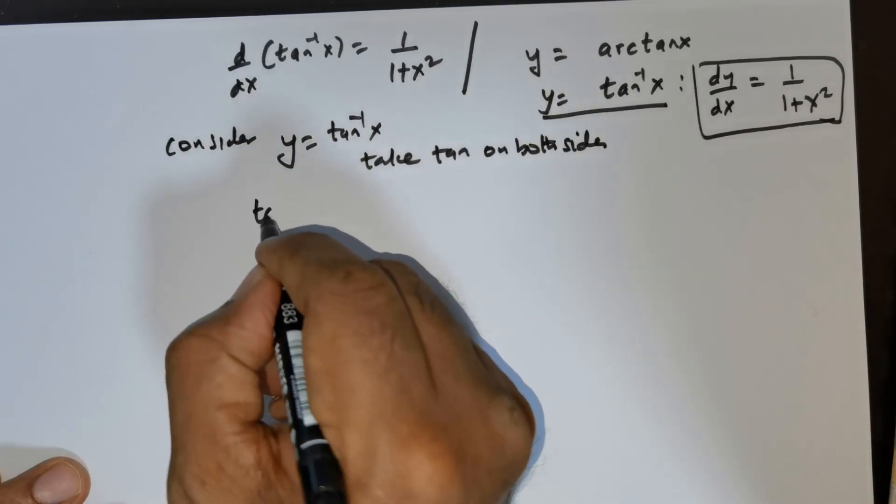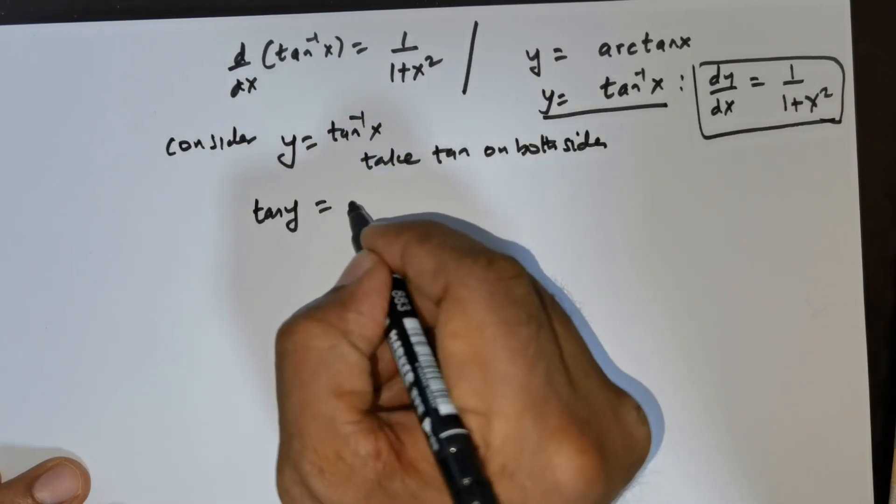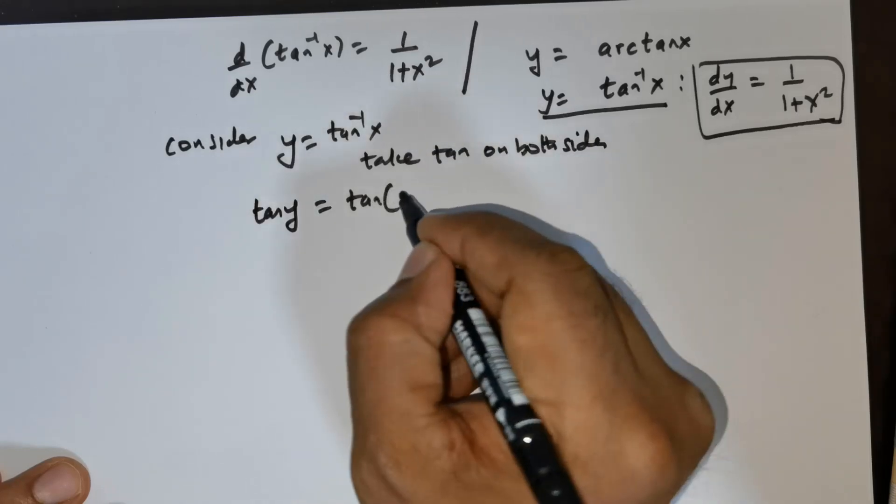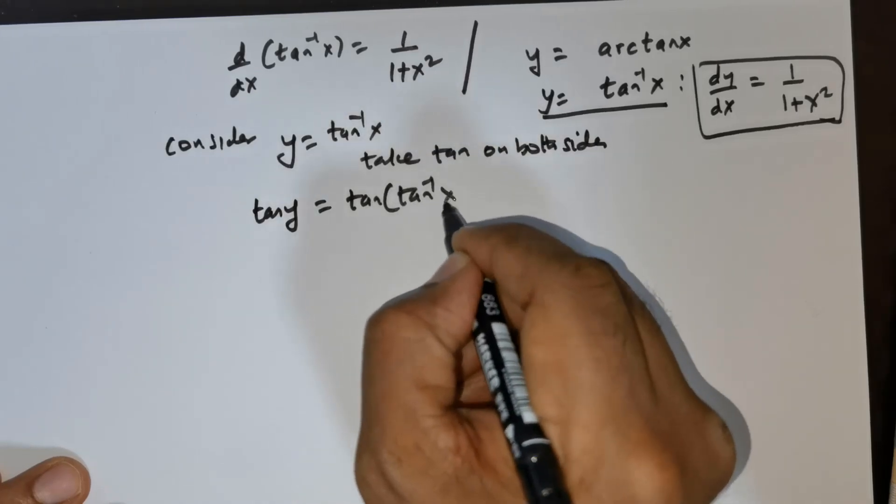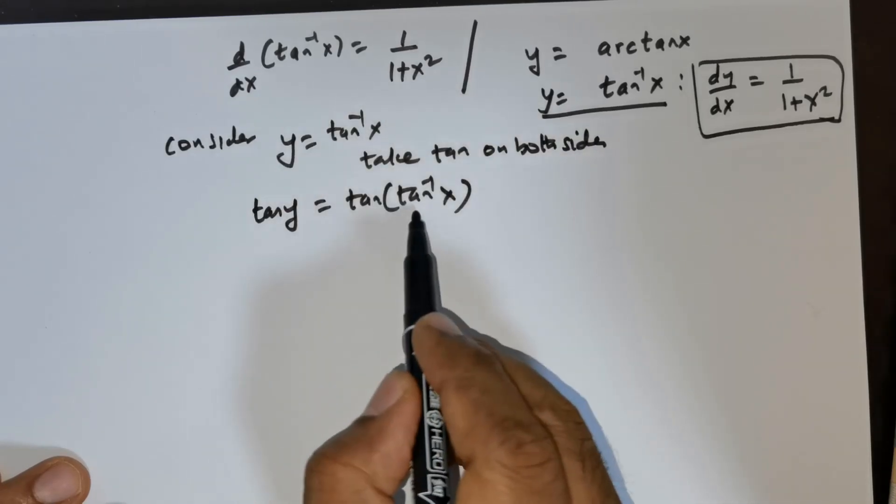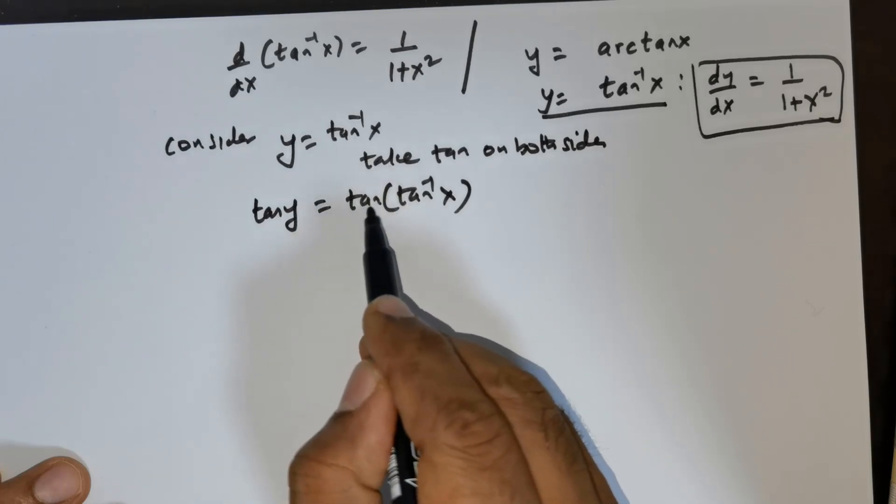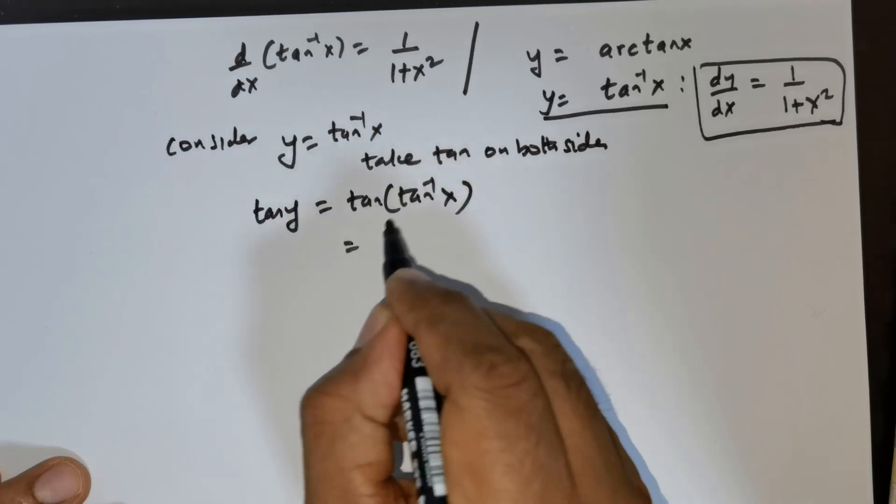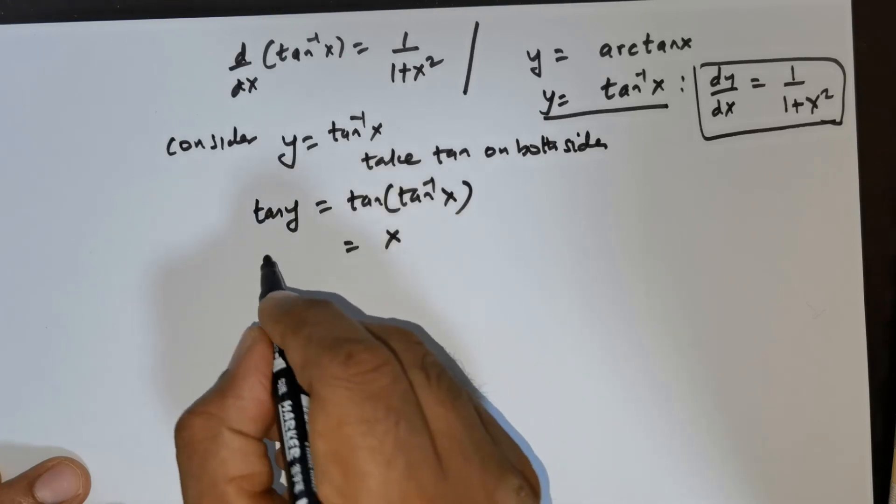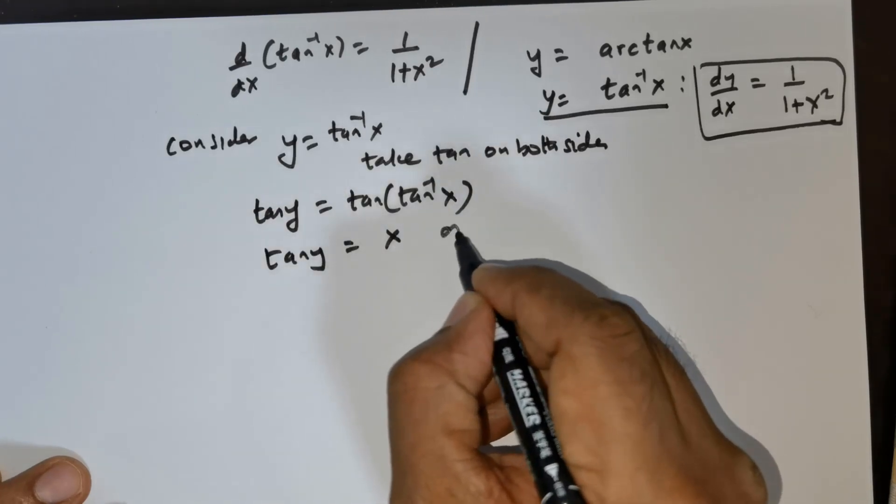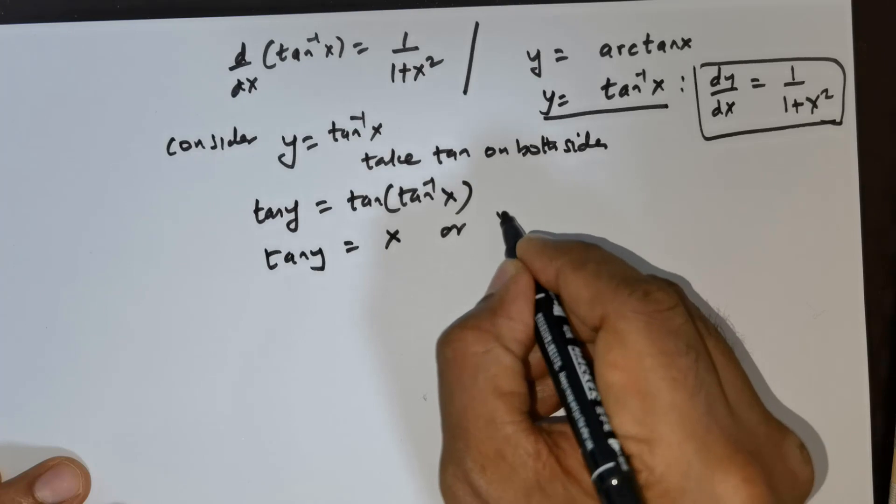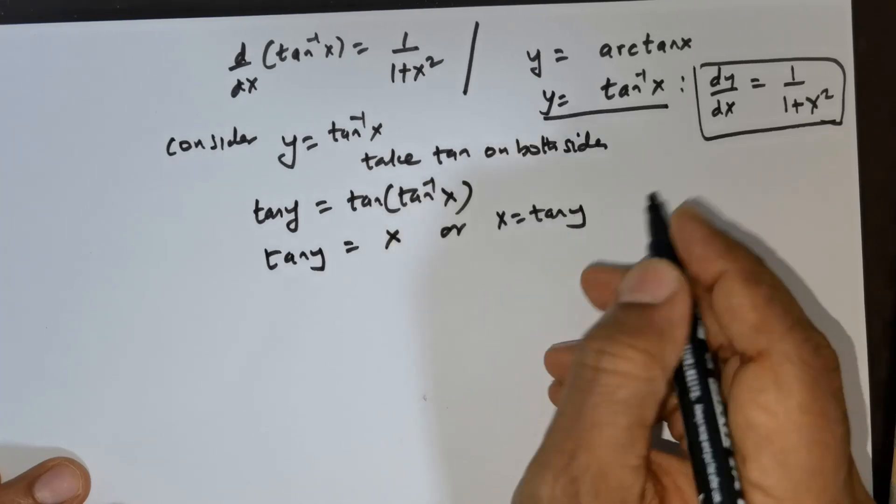So that would mean I have tan y is equal to tan of tan inverse x. Now by the definition of tan inverse, this would get neutralized giving me x is equal to tan y.